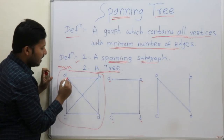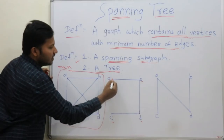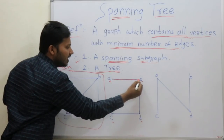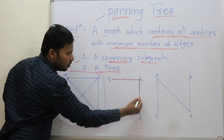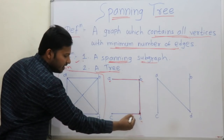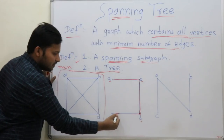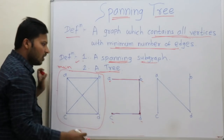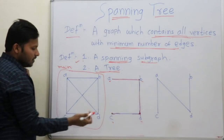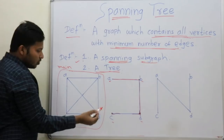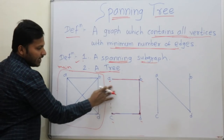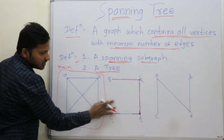Now start from A to B — we draw edge A to B. Then B to D. Then D to C. After drawing these three edges, if we go for drawing another edge, that forms a cycle.